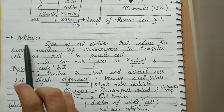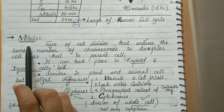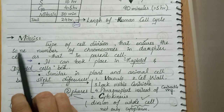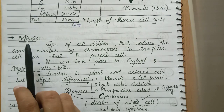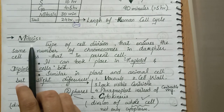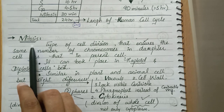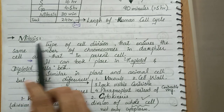Today our topic is about mitosis. So what is mitosis? It is the division process which we call mitosis. But meiosis is also a division process. So let's look at the definitions of mitosis and meiosis.